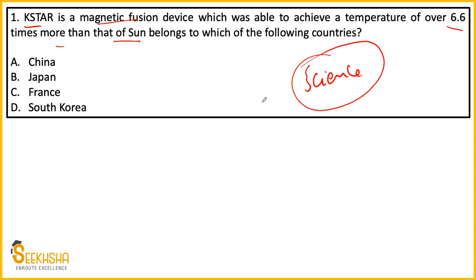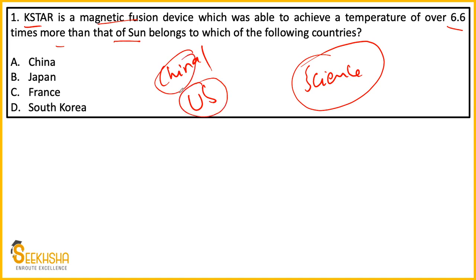This question falls in your science part — general science as well as current affairs and developmental issues — you can cover both areas. The problem is that when a scientific experiment comes up, children who haven't studied tend to guess between China and the USA. The answer here will be South Korea — option D is the correct answer.